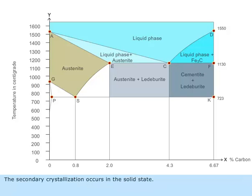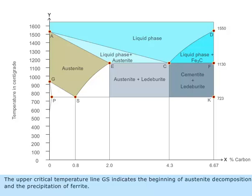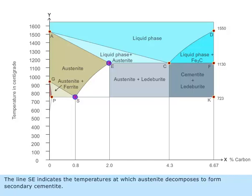The secondary crystallization occurs in the solid state. The upper critical temperature line GS indicates the beginning of austenite decomposition and the precipitation of ferrite. The line SE indicates the temperatures at which austenite decomposes to form secondary cementite.